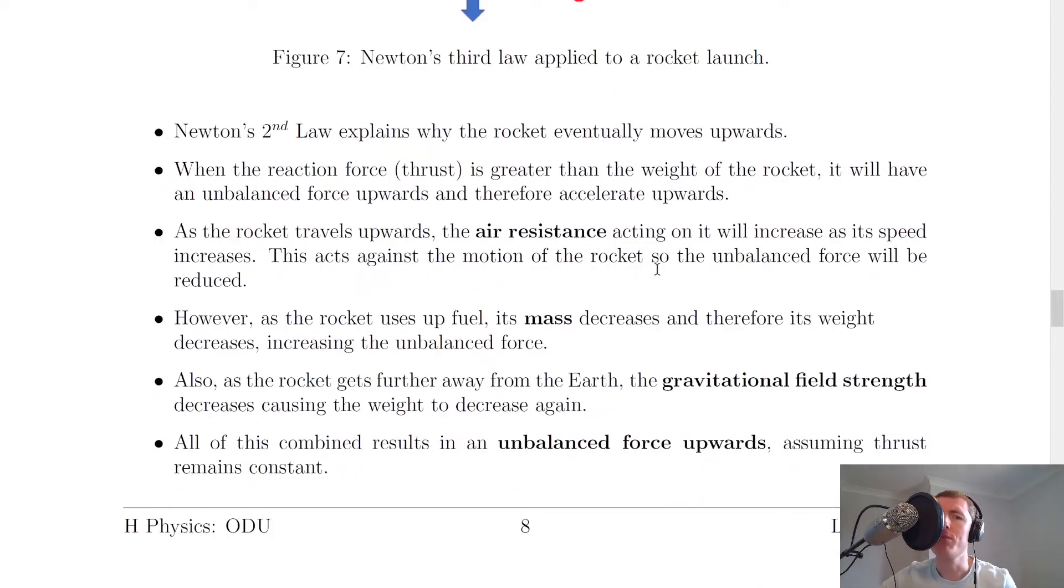So that's Newton's third law and Newton's second law explains why the rocket eventually moves upwards. So when the reaction force, i.e. the thrust, is greater than the weight of the rocket downwards, it will have an unbalanced force upwards and therefore accelerate upwards.